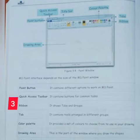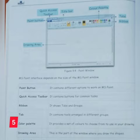Third one is ribbon. It shows tabs and groups. Tab - it controls tools arranged in different groups. Color palette - it provides a set of colors to choose from to use on your drawing. And the last one is drawing area. This is a part of window where you draw the shapes.